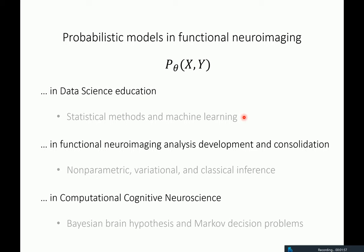In the following, I would like to give you two examples from my research work: first on functional neuroimaging analysis development and consolidation, and then on computational cognitive neuroscience with respect to data science education. Of course, we will see probabilistic models again later on.